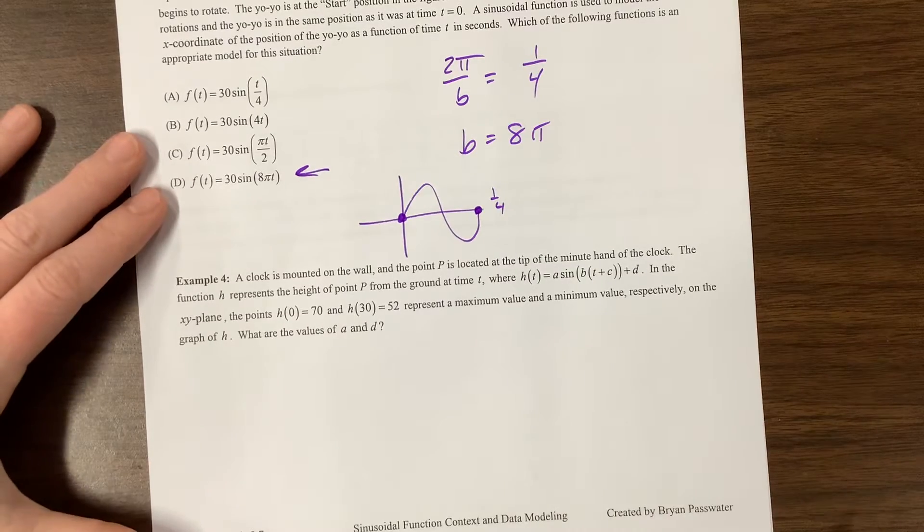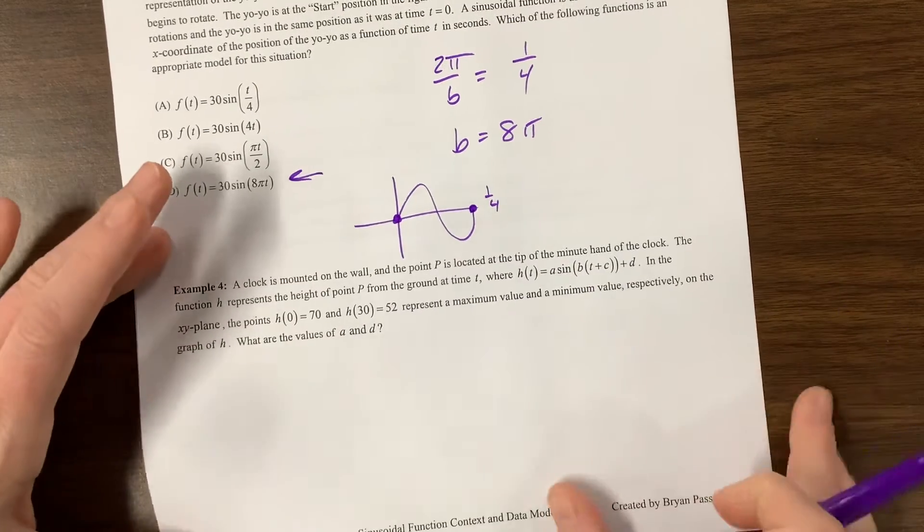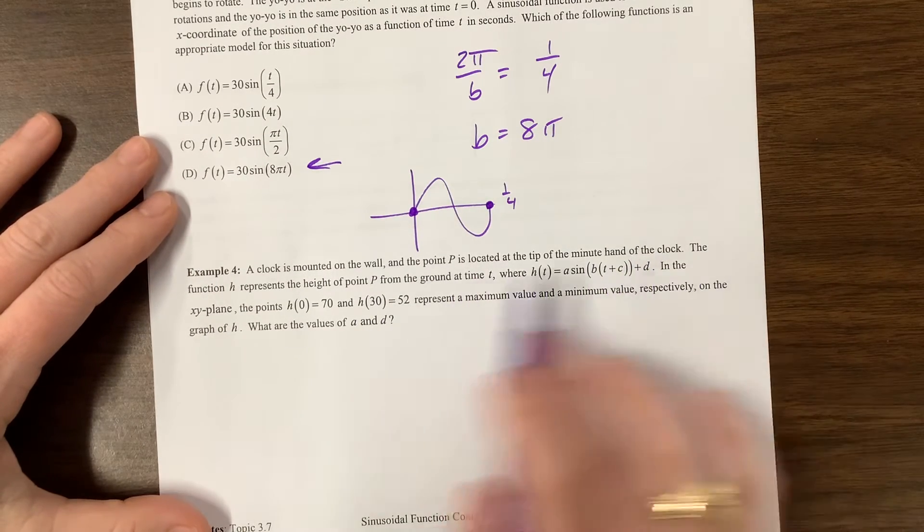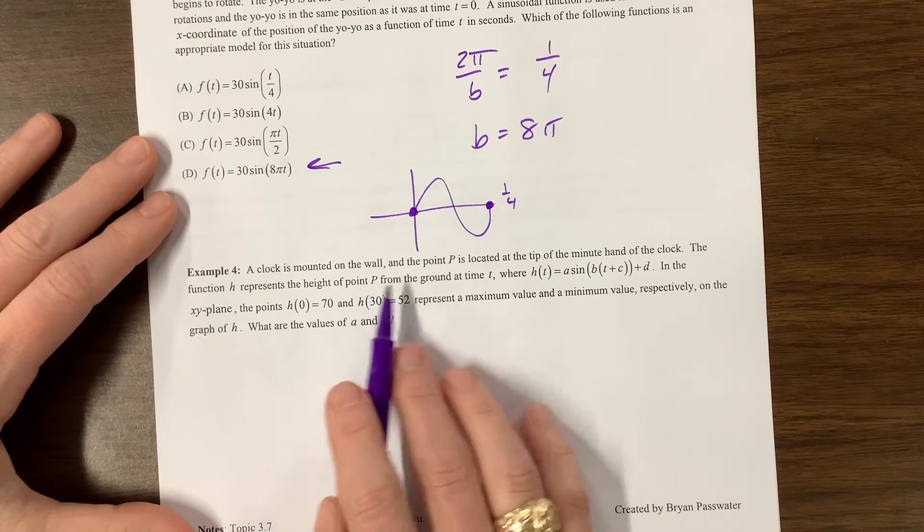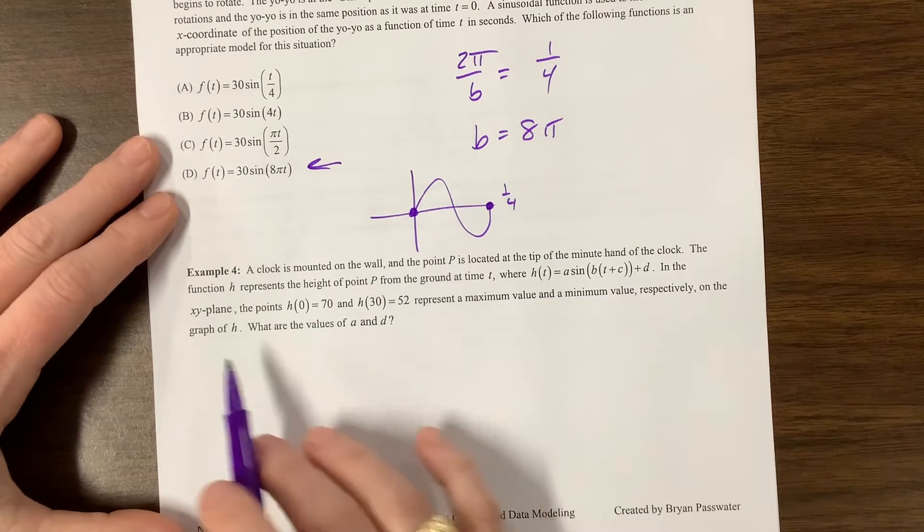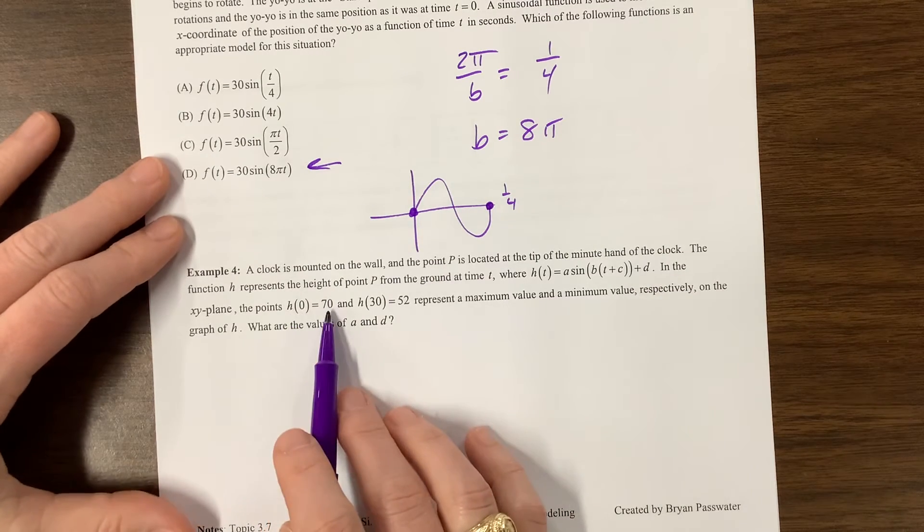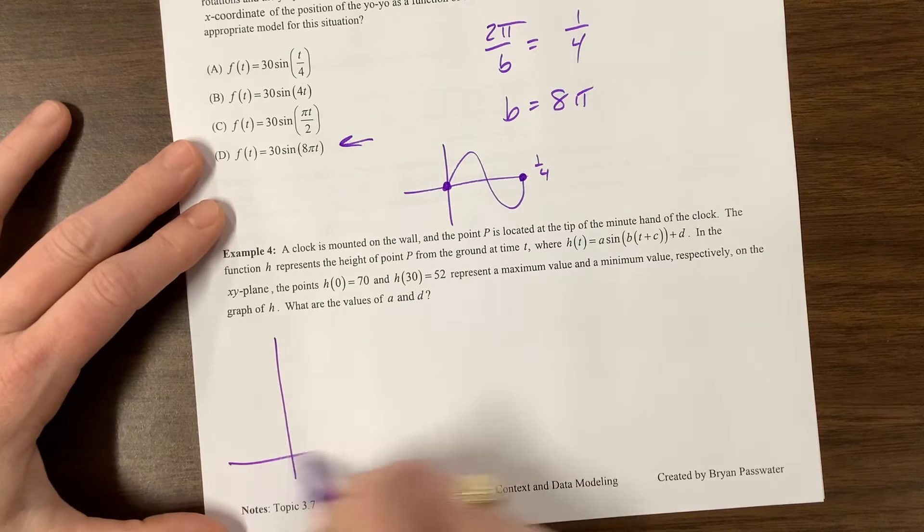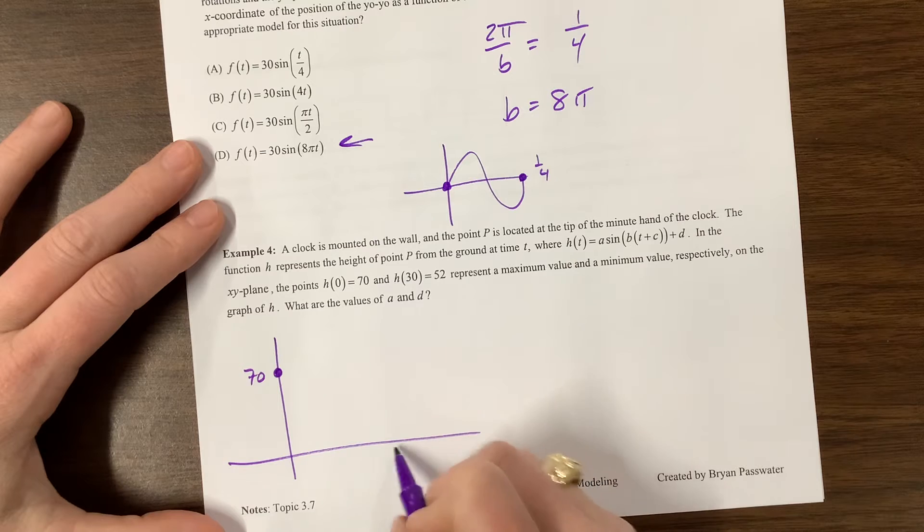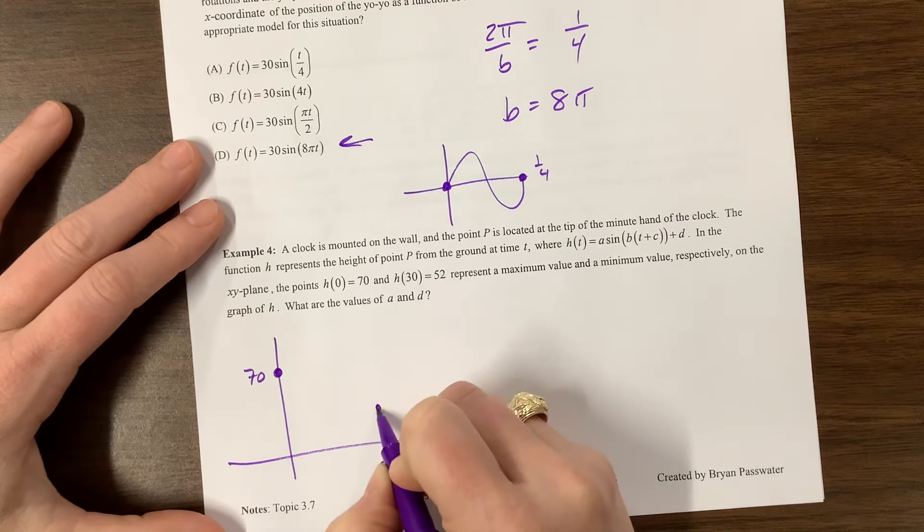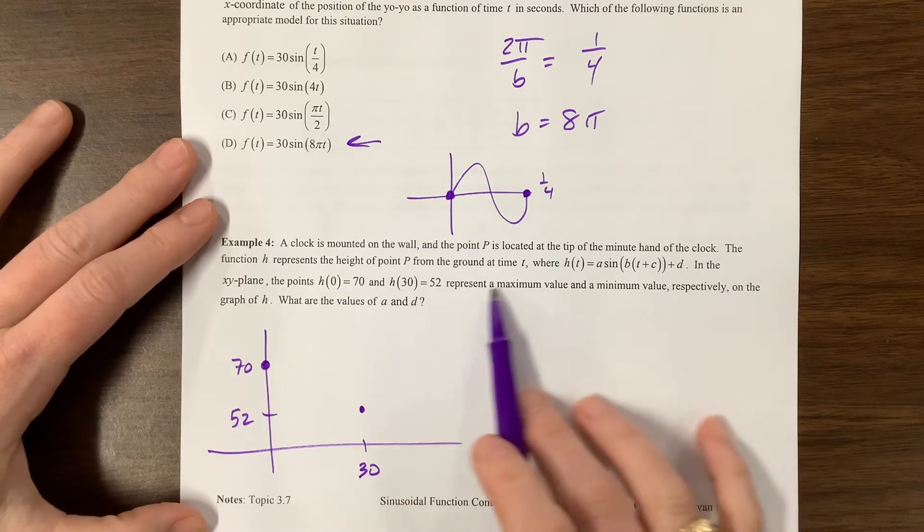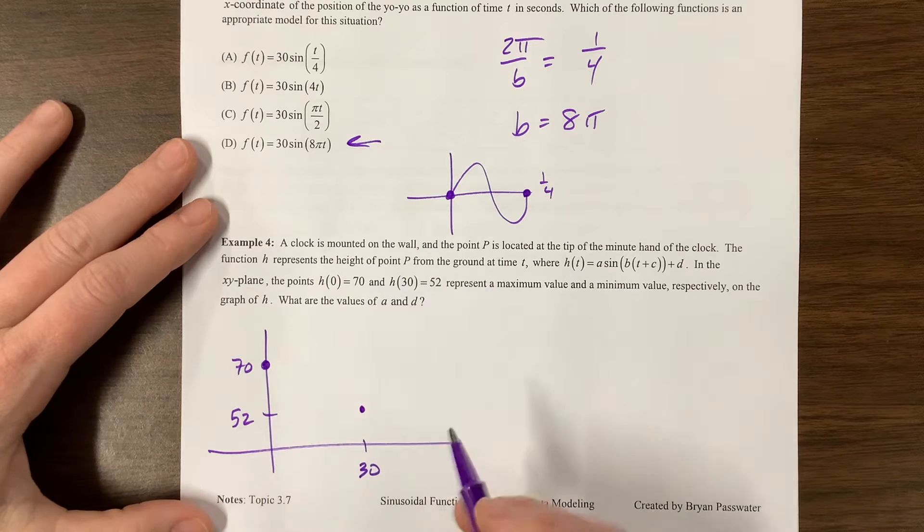A clock is mounted on the wall. The point P is looking at the tip of the minute hand of the clock. The function h represents the height of point P from the ground. And here's the equation. The point h of 0 equals 70, and h of 30 equals 52. This represents a max and a minimum value, respectively, on the graph.